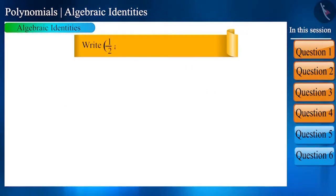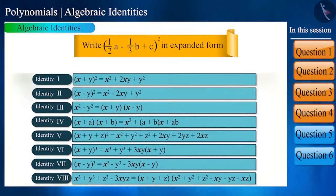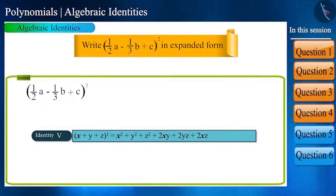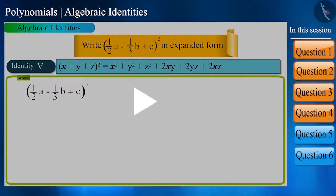Now write (1/2a - 1/3b + c)² in an expanded form. Here which identity will be used? Yes, identity 5. Here x is 1/2a, y is -1/3b, and z is c. This is quite easy. Solve it yourself and see whether you are getting the right answer.